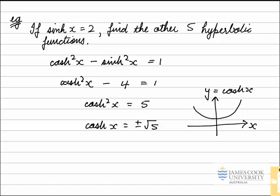And we know that for all x values, cosh x is positive. So the minus solution here is not possible. Therefore, we're going to let cosh x equal positive the square root of 5.